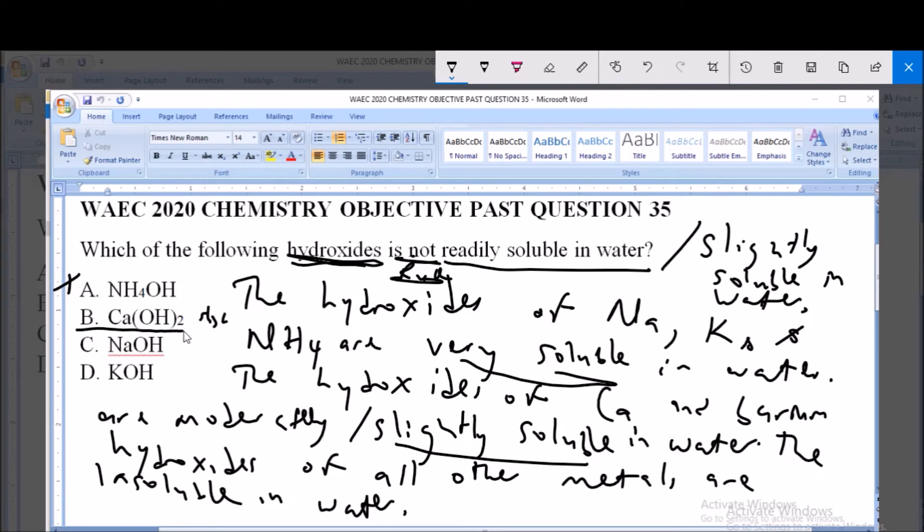So option B, calcium hydroxide is actually the answer to this question. Now looking at options C and D, hydroxides of sodium and potassium as we rightly said are very soluble. So that is why C and D are not the answer to this question.